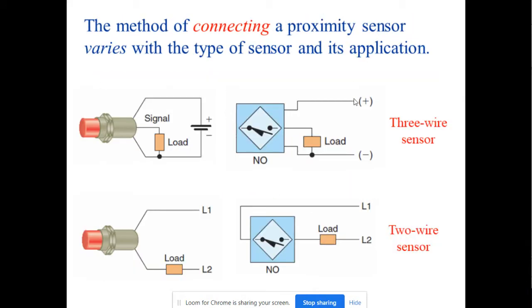The method of connecting a proximity sensor is various. There are two wire sensors or three wire sensors. You can choose which one that you want. And these are available in the market where you can choose from.